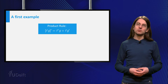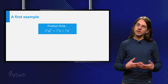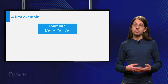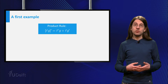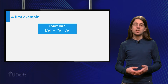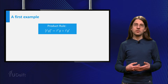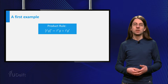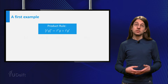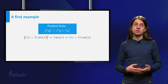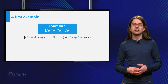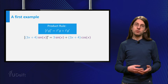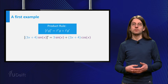Speaking of the product rule, let us recall it. The derivative of f times g equals f prime times g plus f times g prime. For example, the derivative of (3x + 4) times sine of x equals 3 times sine of x plus (3x + 4) times cosine of x.